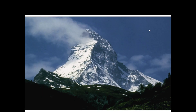Sometimes you will see very sculpted mountain peaks in glacial regions, and those are called horns. Horns have been eroded on multiple sides. This is the famous Matterhorn in Switzerland, and it is a great example of a glacial horn.